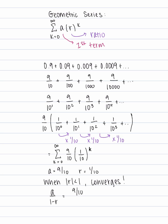We can find what it converges to: a over 1 minus r. That's equal to 9 tenths over 1 minus 1 tenth, which simplifies down to 1. So the series is going to converge to 1.